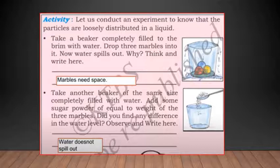Take another beaker of the same size, completely filled with water. Add some sugar powder, equal to weight of the three marbles. Did you find any difference in the water level? Observe and write. Water does not spill out because the sugar gets mixed with the water. Since sugar particles have combined with the water particles, water does not spill out.